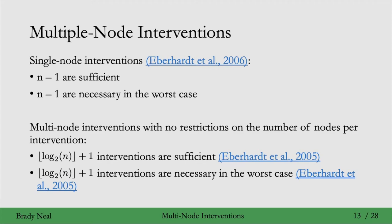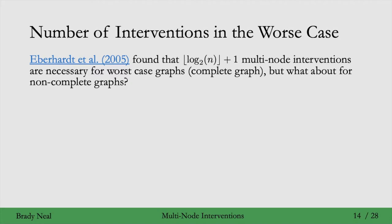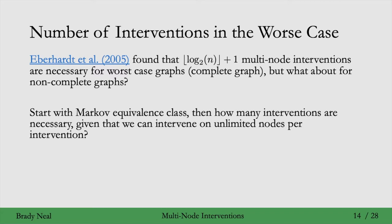It seems like we won't often be in the case where we have a complete graph. So what about when we have graphs that are not complete? From looking at the observational data, we can identify the Markov equivalence class — the essential graph — where we've identified the skeleton of the graph and the immoralities. If we're given that essential graph and it's not complete, maybe we can do better than the floor of log base 2 of n plus 1 result. So how many interventions are necessary when we know the essential graph, given that we can intervene on as many nodes as we like?